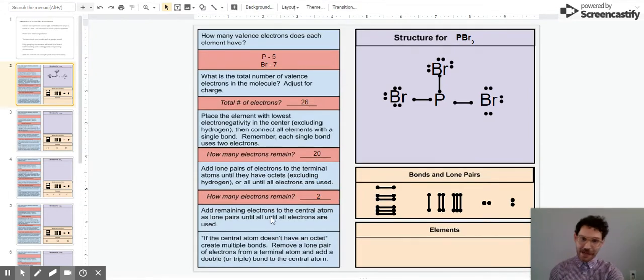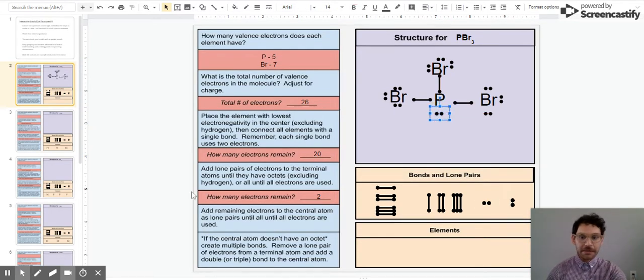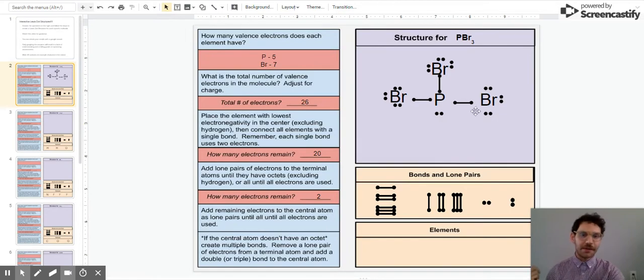I want to add the remaining electrons to the central atom as lone pairs. I only got two electrons left and I'll put them on my phosphorus. Next step - this is only if the central atom doesn't have an octet. So let's check. Does phosphorus have an octet here? I've got six electrons in bonds and I have eight electrons if you count this lone pair. That's an octet.